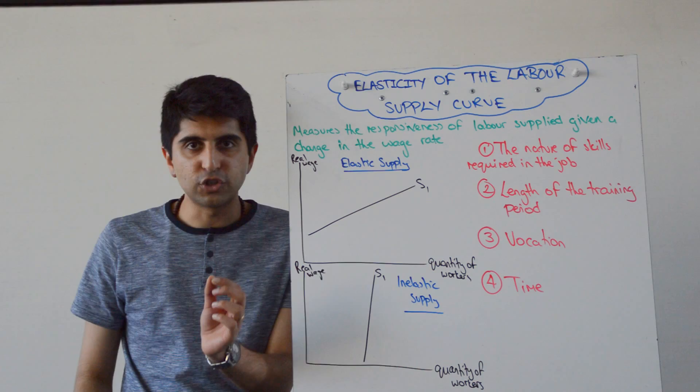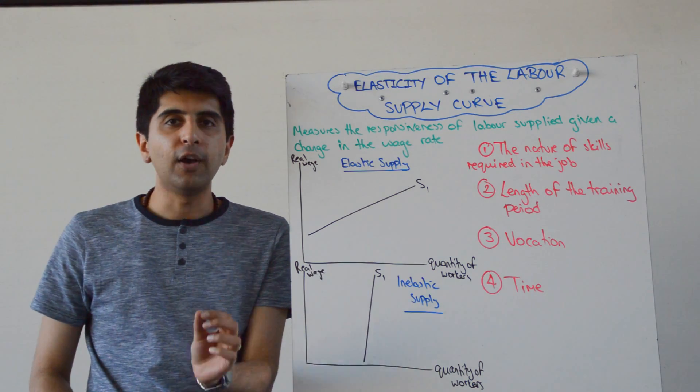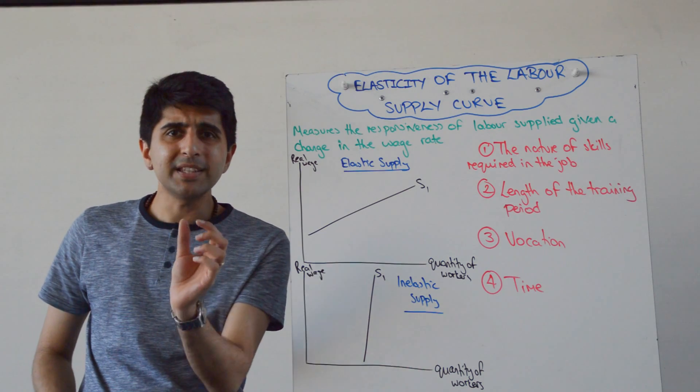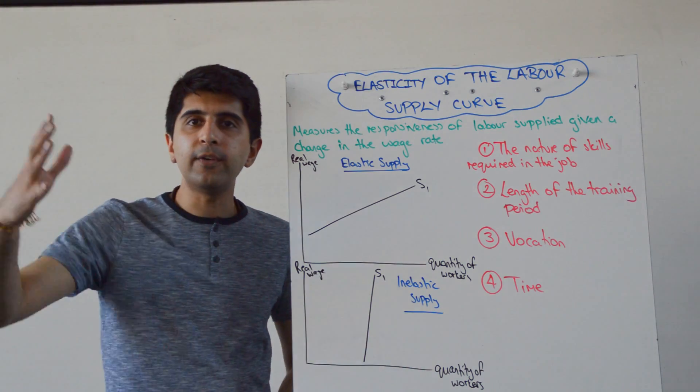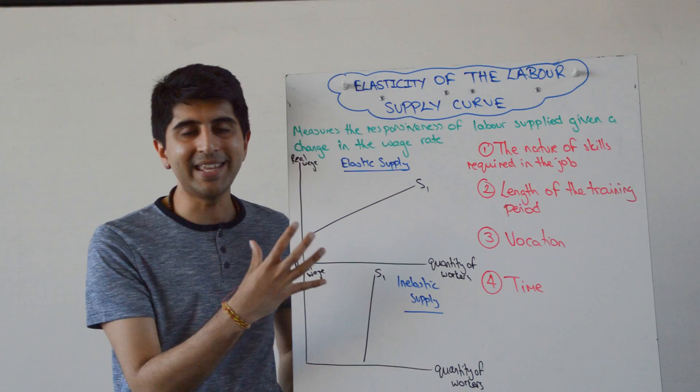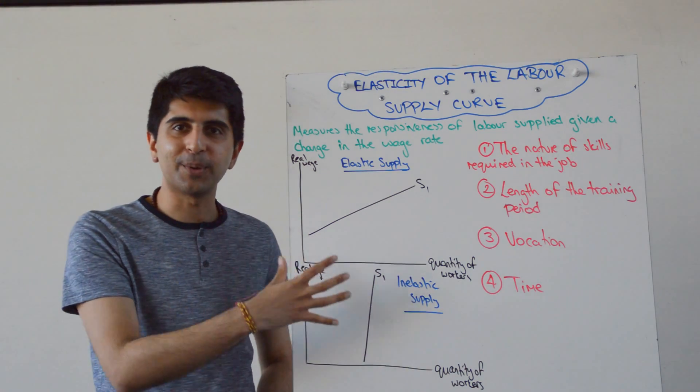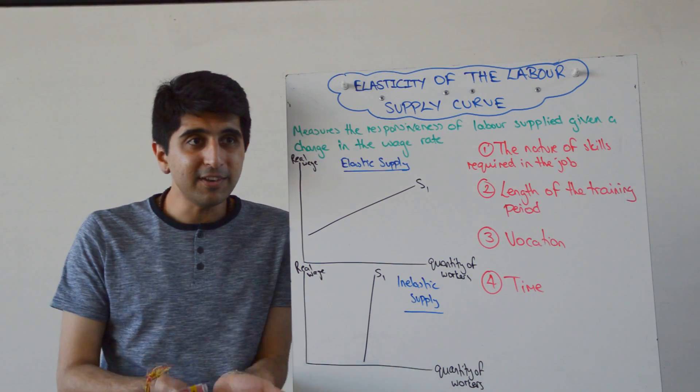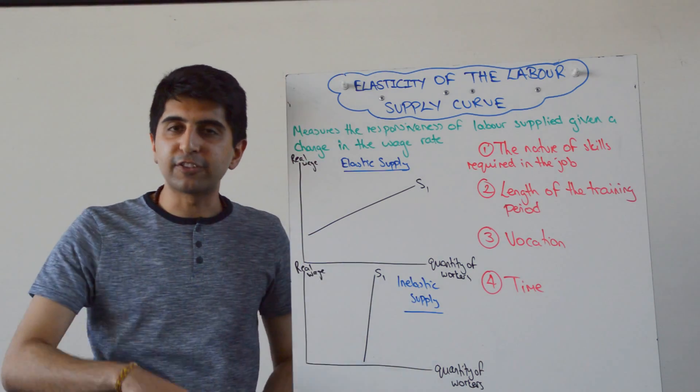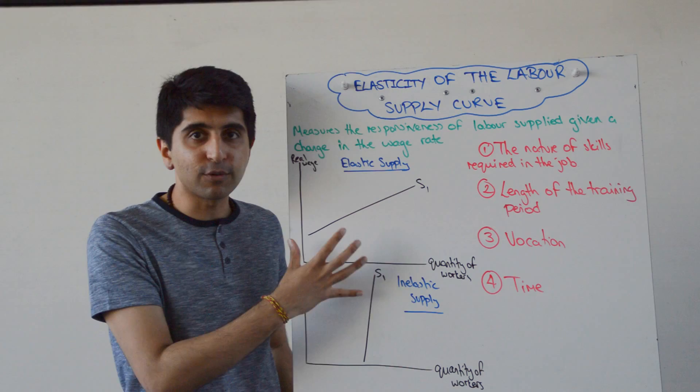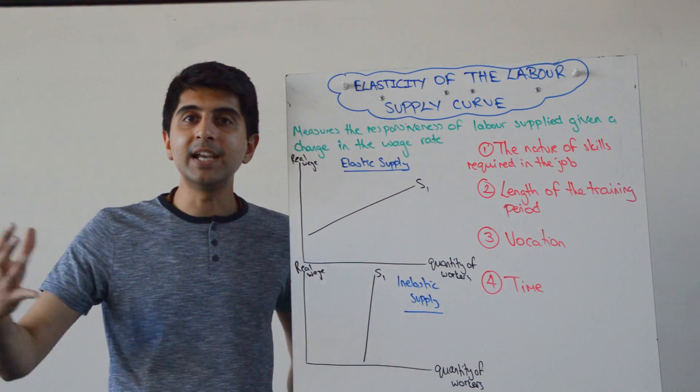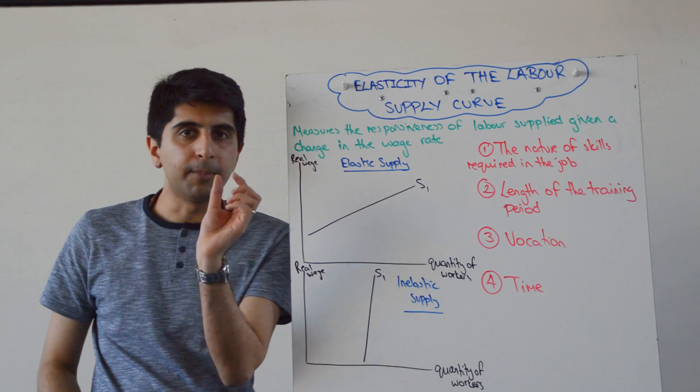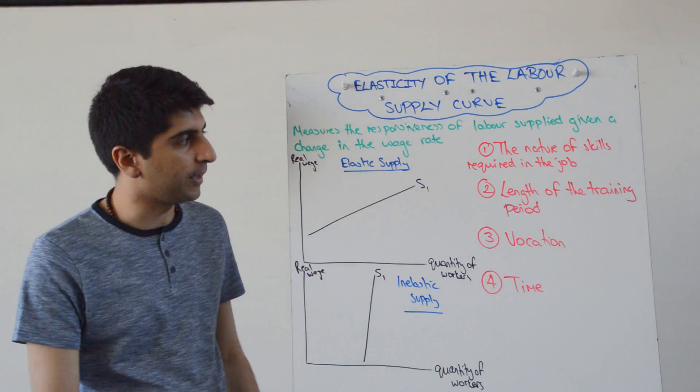So the nature of the skills required in the job is a very important determinant of the elasticity of labor supply. The greater the skills required, the harder it is for those workers who are not already in the profession to take jobs in the profession. So if there are very specific skill sets, even if wages increase massively, it's going to be very hard for those people who don't have the right skills to work in this industry to come and take the jobs. So the more specific the skill requirements are, the more inelastic supply tends to be.